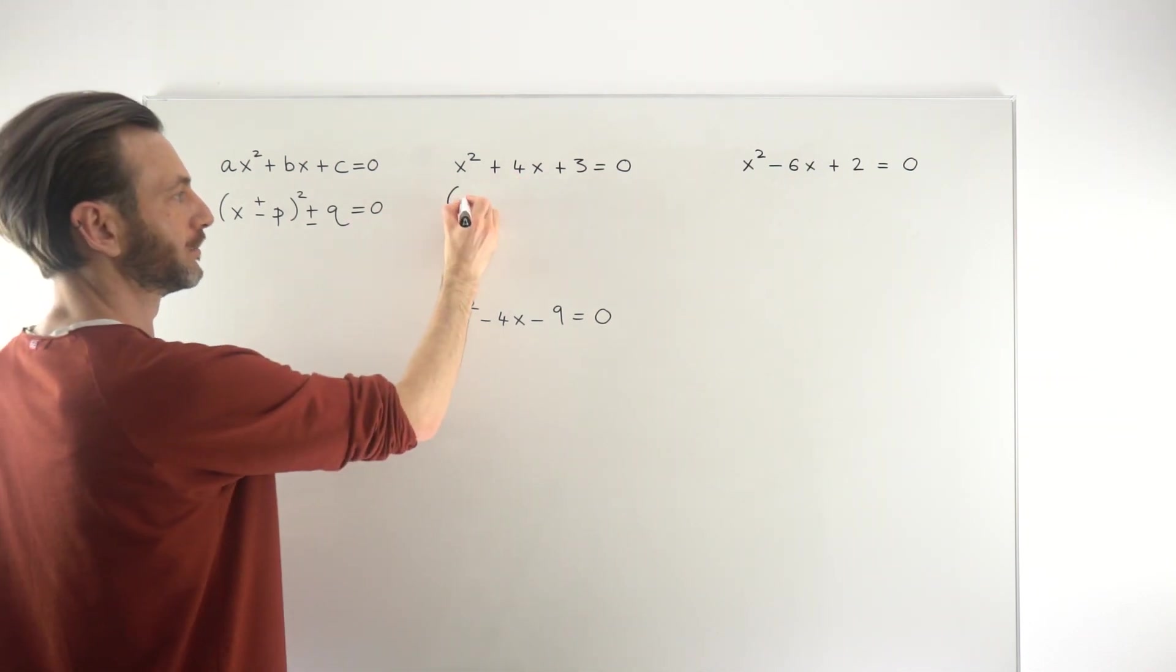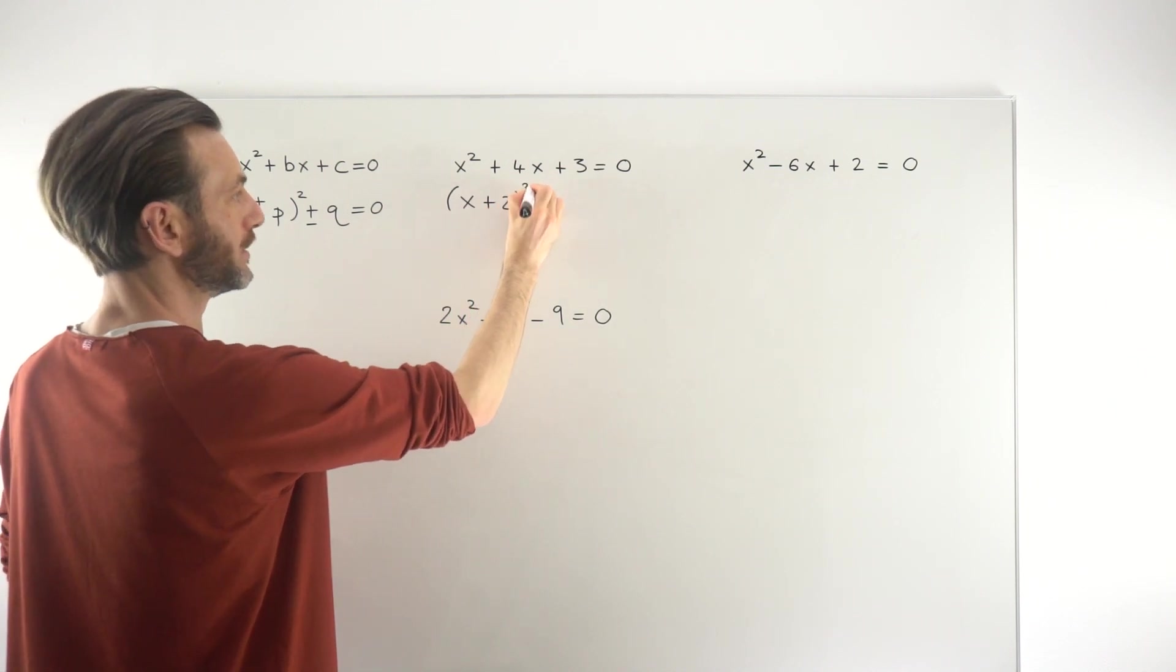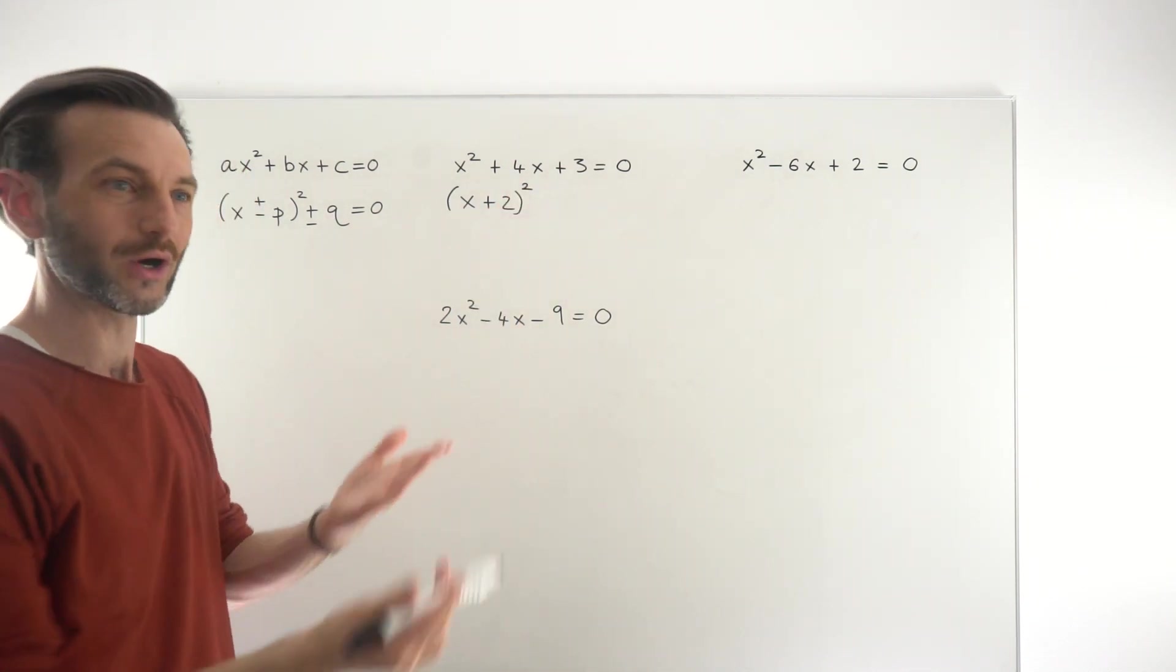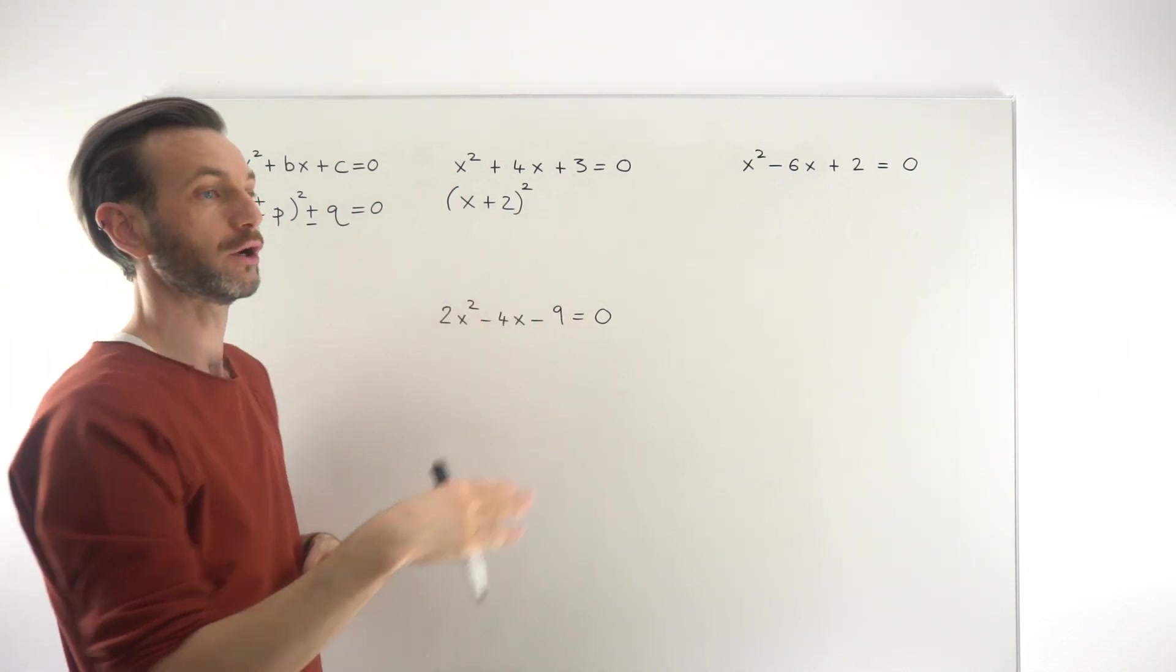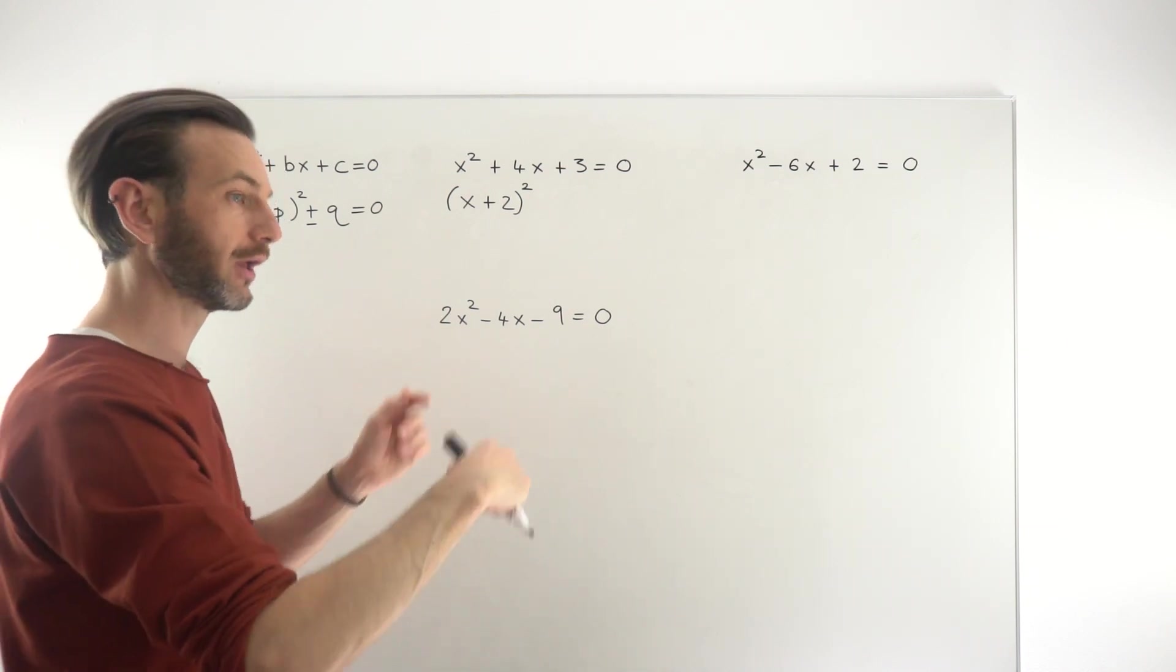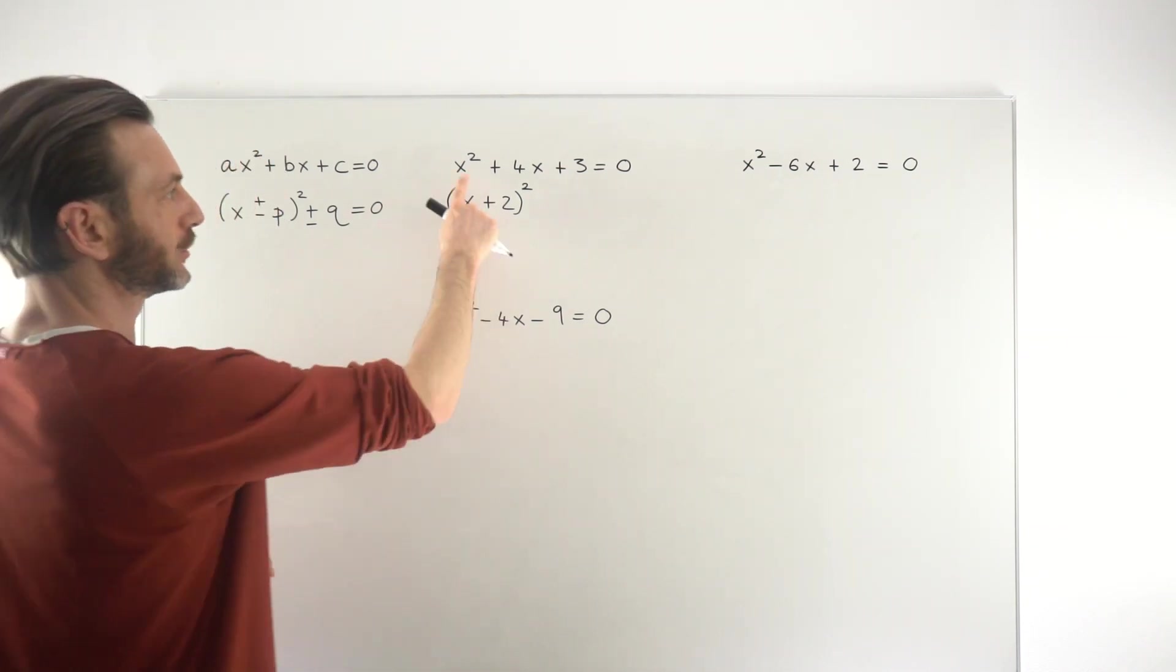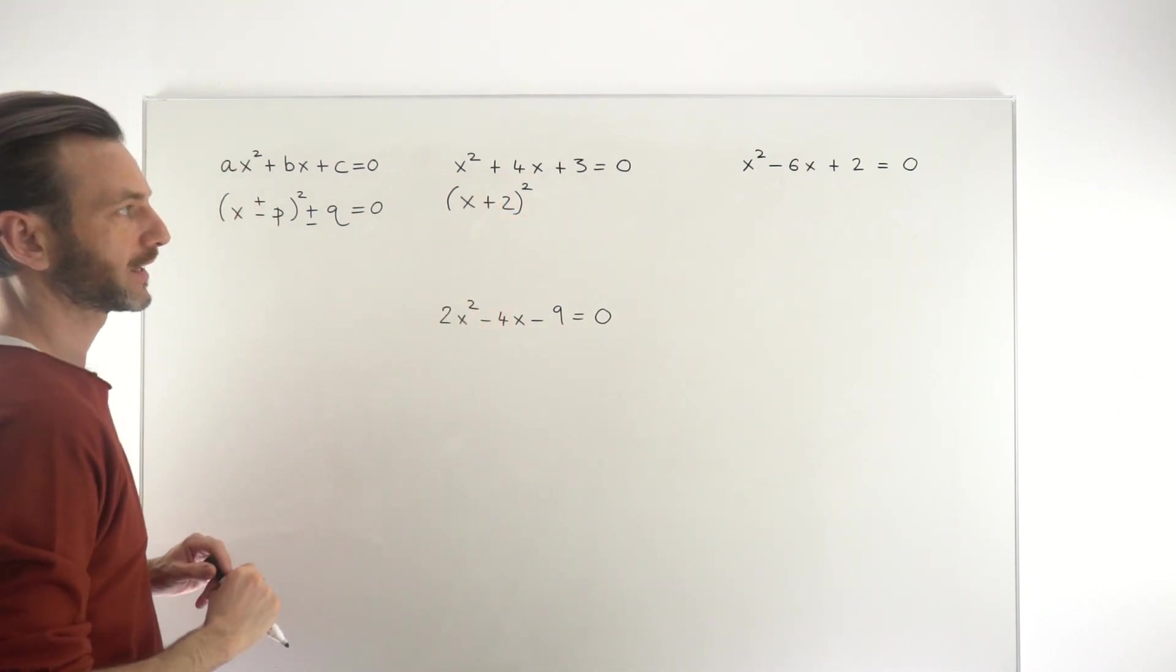So ideally you would already be familiar with completing the square if you're taking this class, but if not, maybe check out what I'm doing here. If it doesn't make sense to you, then check out a class on completing the square and then you can come back to this one. But basically you just look at this expression here. You take half of this number that goes in the bracket.